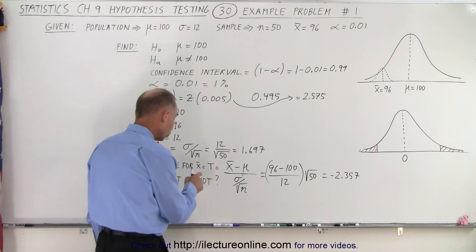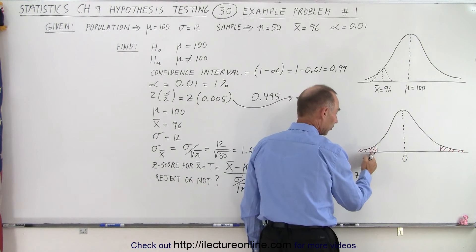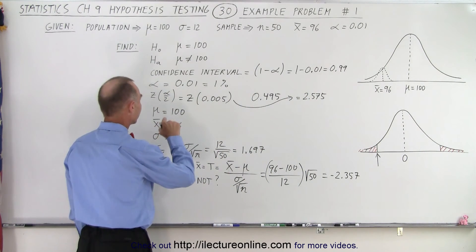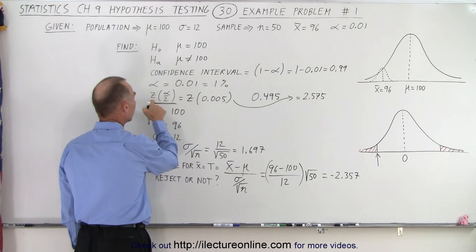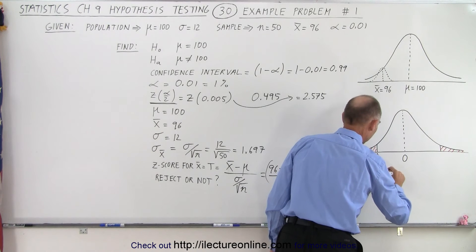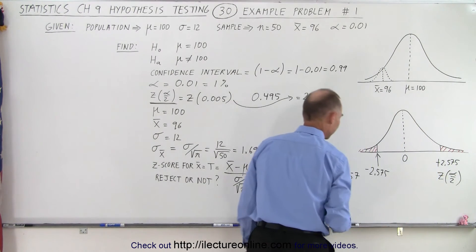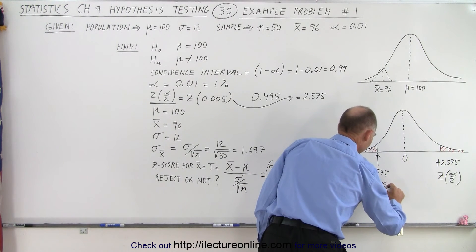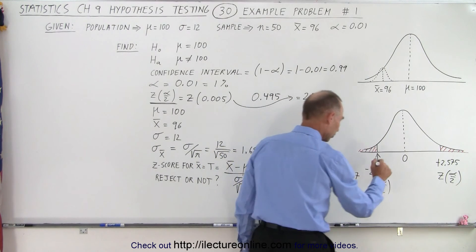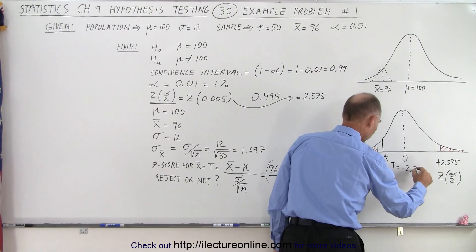Now we need to determine if the test statistic falls within the non-critical region or within the critical region. We're on the lower end — so does it fall here or there? We need to find this limit by using the z-score of half the level of significance, which we said was 2.575. So it would be minus 2.575 on the low end and plus 2.575 on the upper end. Our test statistic is minus 2.357, which places it right about there.